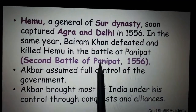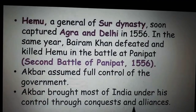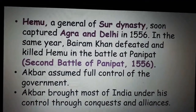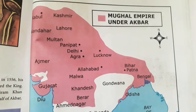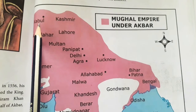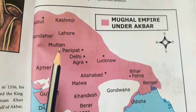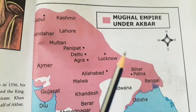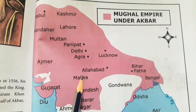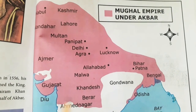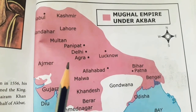Akbar assumed full control of the government and brought most of India under his control through conquest and alliances. He captured Kabul, Kashmir, Lahore, Gandahar, Multan, Panipat, Delhi, Agra, Lucknow, Allahabad, Bihar, Patna, Bengal, Odisha, Malwa, Gujarat, and Ajmer, among many other places, defeating numerous rulers.